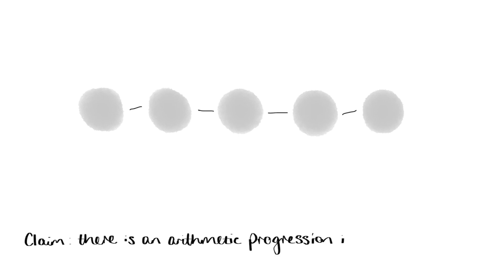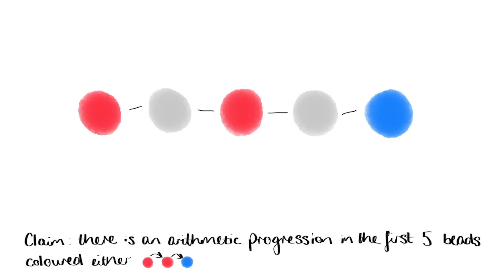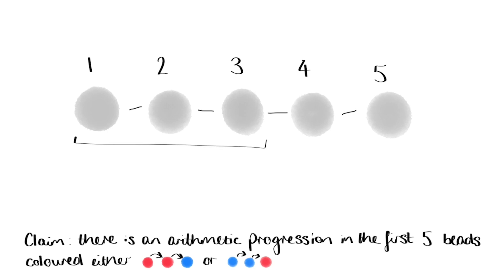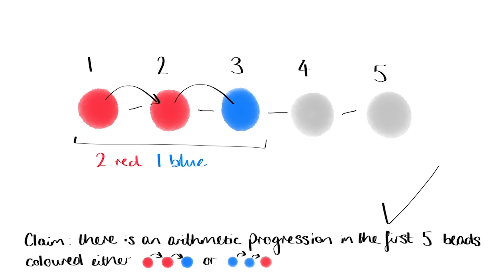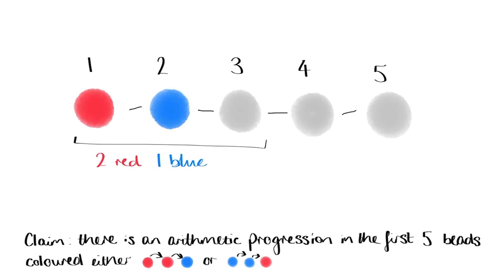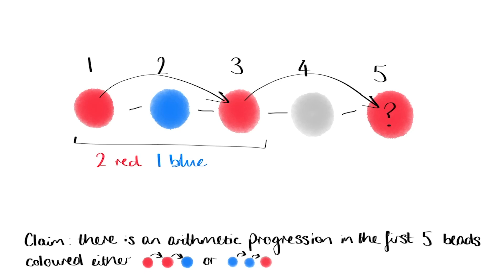Let's look at the first five beads. I claim that there is definitely an arithmetic progression within the first five beads which is coloured either red-red-blue or blue-blue-red. Let's prove this. The first three beads can't all be the same, otherwise they would form a monochromatic arithmetic progression. So of the first three beads we must have either two red and one blue, or two blue and one red. To simplify things, let's suppose two red and one blue, as the argument works the same if we swap the roles of the two colours. If the first three beads are red-red-blue, then we're done. If the first three beads are red-blue-red, then the fifth bead has to be blue, otherwise 1-3-5 is a red monochromatic arithmetic progression. But now 1-3-5 forms a red-red-blue arithmetic progression, so again we're done.